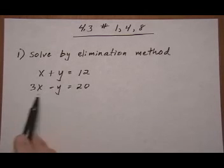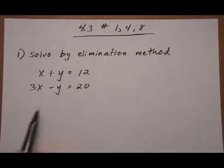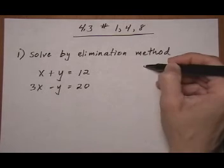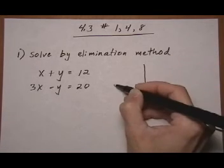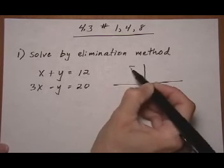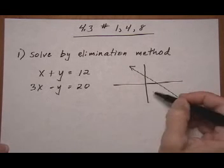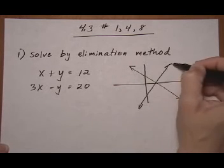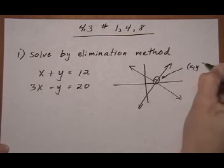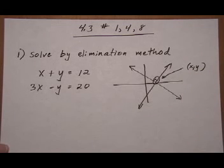Here we have x plus y equals 12 and 3x take away y equals 20. Now in the previous section, if we were to graph these, we would find some points, graph the equations and we'd get something that looks like that, and we'd have an intersection at the point x, y, which would be our solution point.